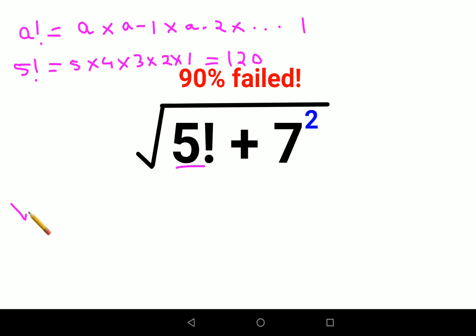So I have root of 120 plus 7 square which is 49. So this comes out to be root of 169.